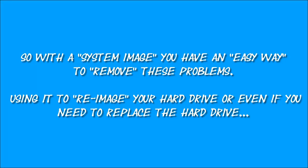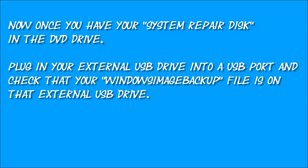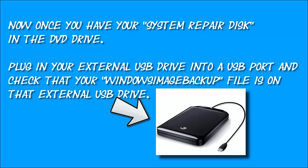Turn on your computer and put your Windows repair disk into the DVD player — the one that we made at the end of the video on how to make a systems image. Once you have your systems repair disk in the DVD drive, plug in your external USB drive into your USB port and check that your Windows image backup file is on that external USB drive.